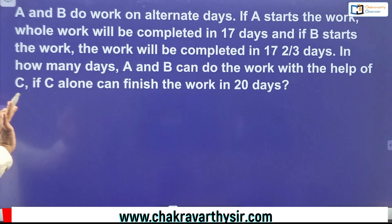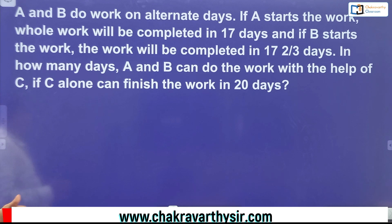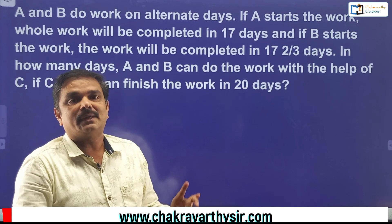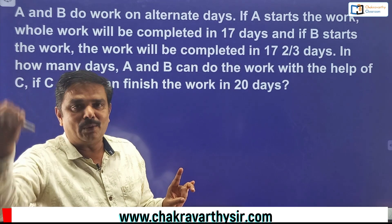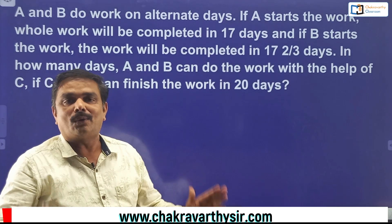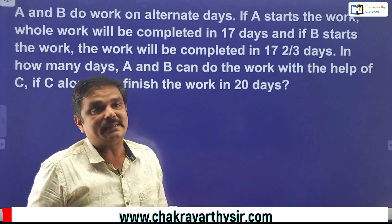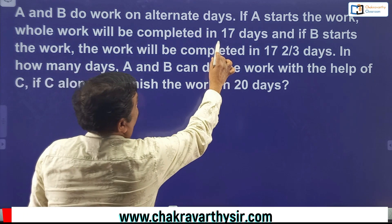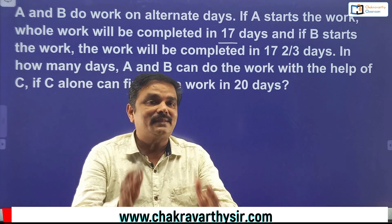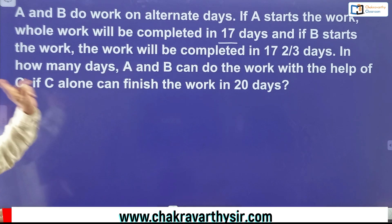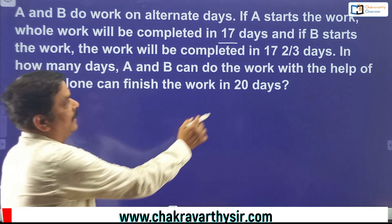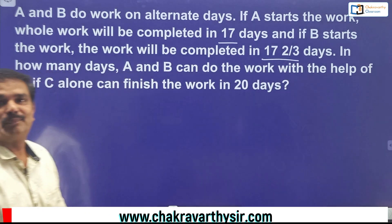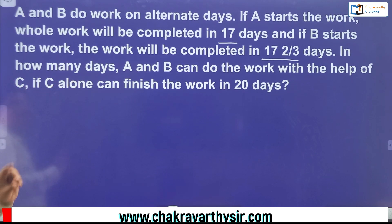What have they given? We need to read the question properly. A and B do the work on alternate days — meaning A works today, B works tomorrow, A the day after, and so on. If A starts the work, the whole work will be completed in 17 days. If B starts the work, it will be completed in 17⅔ days. Then the question asks: in how many days can A and B do the work with the help of C, if C alone can finish the work in 20 days?